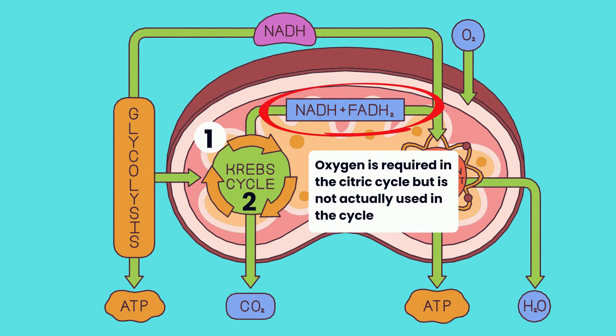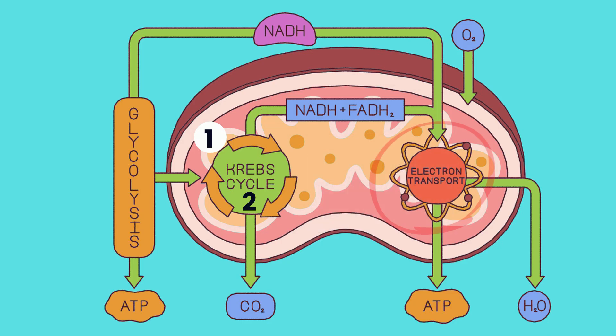And finally, we get to the last step, the electron transport chain. This happens within the inner membrane of the mitochondria and it requires oxygen. All those high-energy molecules from before are used to make a lot of ATP, like over 30 molecules. This step also produces water as a waste product.